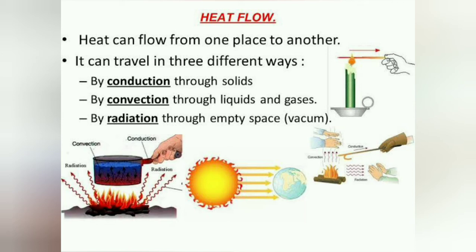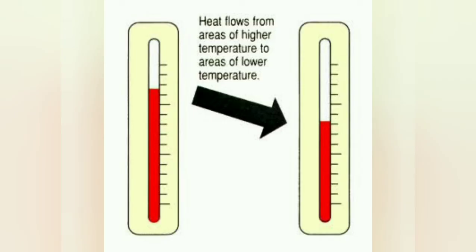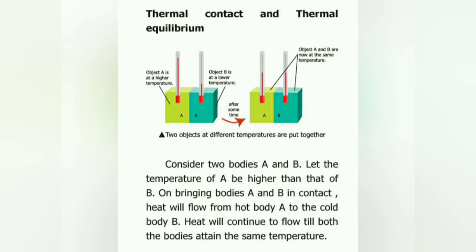Heat flow. How will we identify the heat flow? By measuring the temperature. Heat flows from one place to another — it can travel in three different ways: by conduction in solids, by convection in liquids and gases, and by radiation through empty space. Heat usually flows from areas of higher temperature to areas of lower temperature.